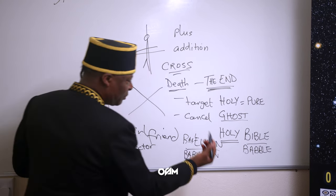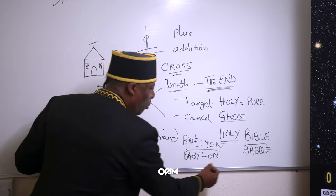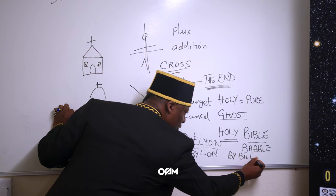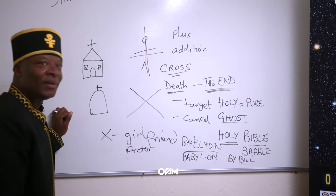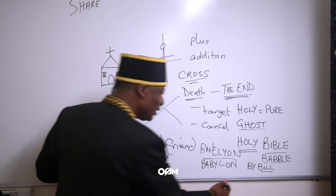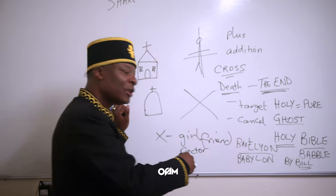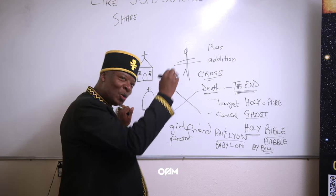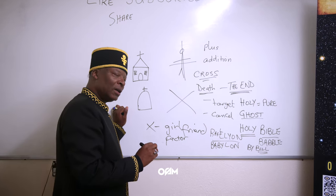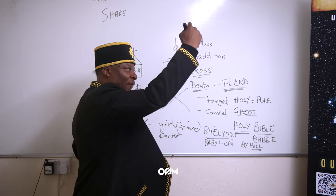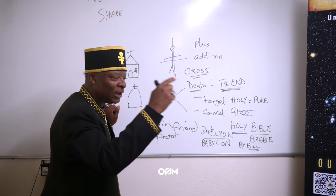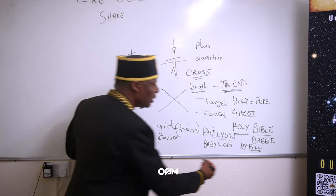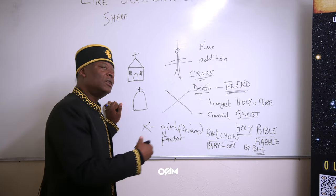This book was written by a person called Bill. The word Bill is very important in the English language because the person who co-wrote the Bible is William Shakespeare — he actually co-signs it in the Bible. If you count 46 lines down, the 46th word confirms it. I'm sure people will tell you it's William Shakespeare.